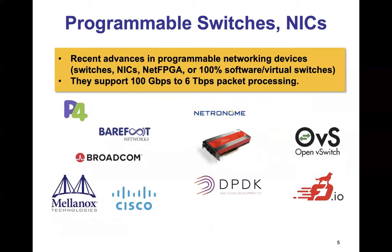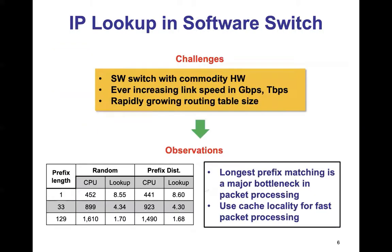Recently, much advances have been made in programmable networking devices, including switches, routers, NICs, NetFPGA, and 100% software or virtual switches. These devices support high-speed networking from 100 Gbps to some terabps. Examples are P4-enabled chips for switches like those from Barefoot Networks and Broadcom — namely Tofino chips from Barefoot Networks — and some smart NICs from Nanotronics, Xilinx, and Intel DPDK, and 100% software switches like OVS (OpenVSwitch) and VPP by FDIO. The question really is how IP lookup performs in software switches, especially its processing speed compared to traditional ASIC-based hardware switches.